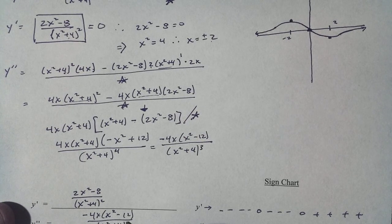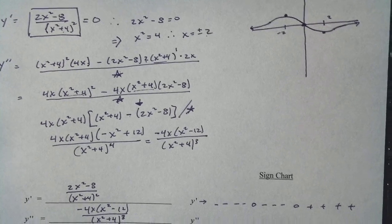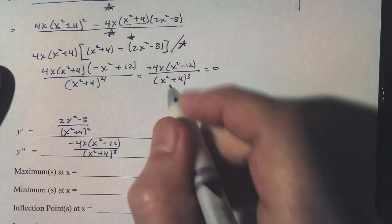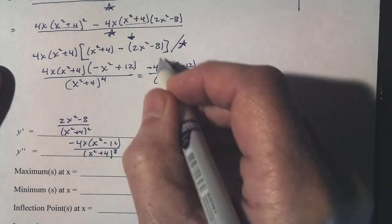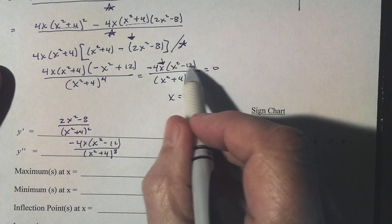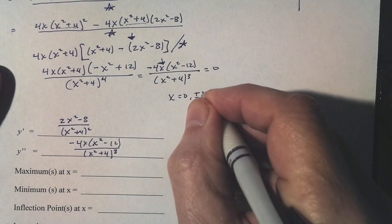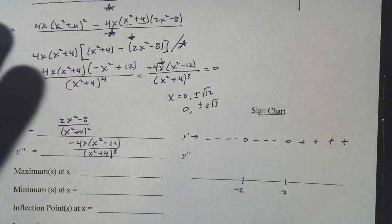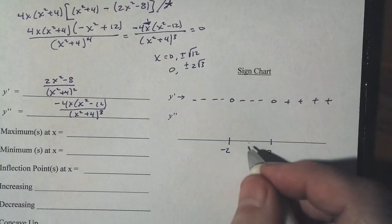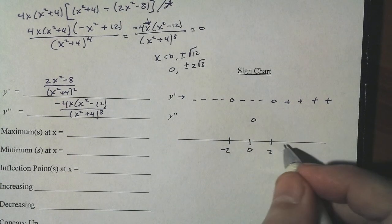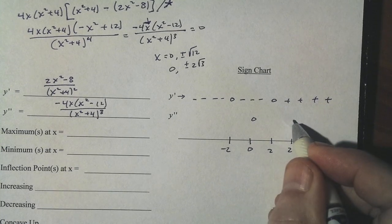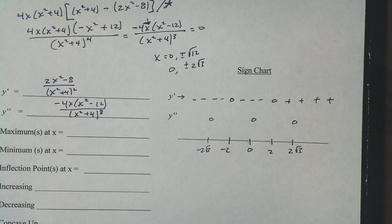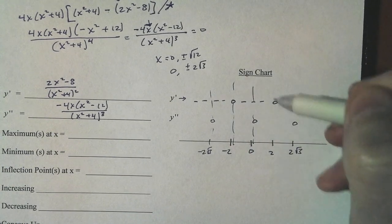Setting the second derivative equal to zero: zeros occur at x equals 0, and where x squared equals 12, so x equals plus or minus square root of 12, which simplifies to plus or minus 2 square root of 3. So the second derivative is zero at x equals 0, x equals 2 square root of 3, and x equals negative 2 square root of 3. These divide the number line into regions we'll analyze on the graph.